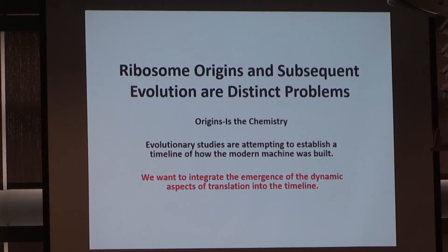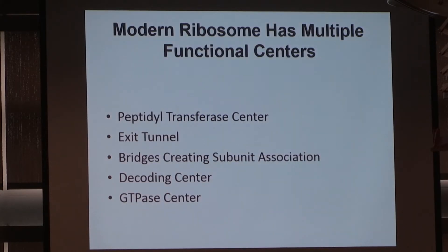The other problem is the issue of what happens after you get a primitive translation machinery. So once you have a primitive translation machinery, how do you go from there to the modern ribosome? That's ribosome history — a separate issue, but in many ways more accessible. It's easier to say things about it without doing experiments necessarily, just by comparing structures. You should realize there are multiple functional centers in the ribosome — at least five. It's a complex, very dynamic machine, and it's obviously been built up over time.